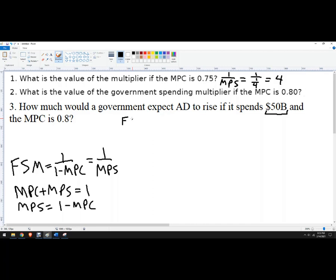So the fiscal spending multiplier in this case is 1 over 0.2.